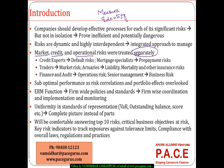For example, every company has credit experts to handle default-related risks, mortgage specialists to handle prepayment risks, traders who take care of market risk, actuaries who handle liability, mortality, and other insurance risks, and an audit team for operations risk, while senior management looks at business risk. Every firm has these specialists handling each risk in isolation. The extent of communication between them is what acts as a differentiator in organizational growth.